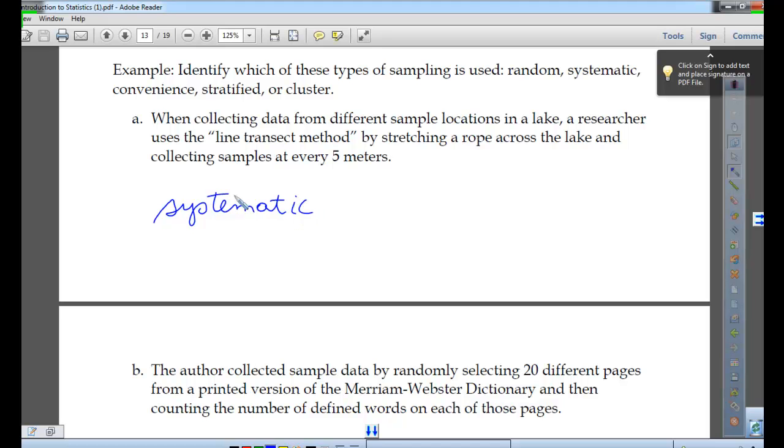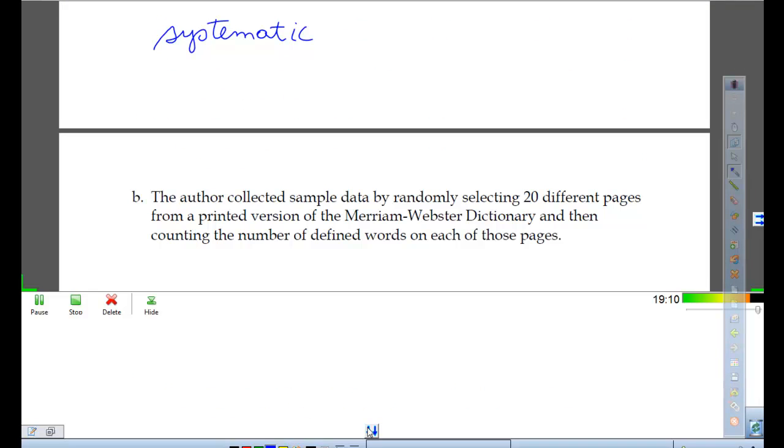The author collected sample data by randomly selecting 20 different pages from a printed version of the Merriam-Webster dictionary and then counting the number of defined words on each of those pages. Randomly selecting 20 different pages and then counting the number. What is it? Cluster. It's a cluster. Pages obviously could be considered a group in the dictionary. Once we picked the page, we looked at what? Every word on the page. So cluster sampling.